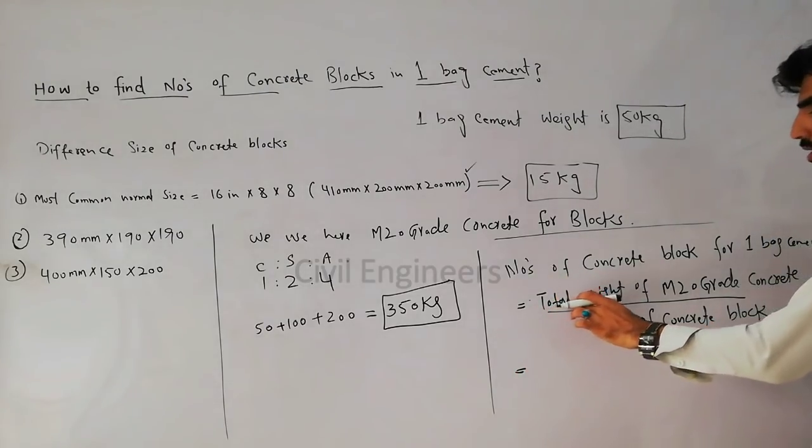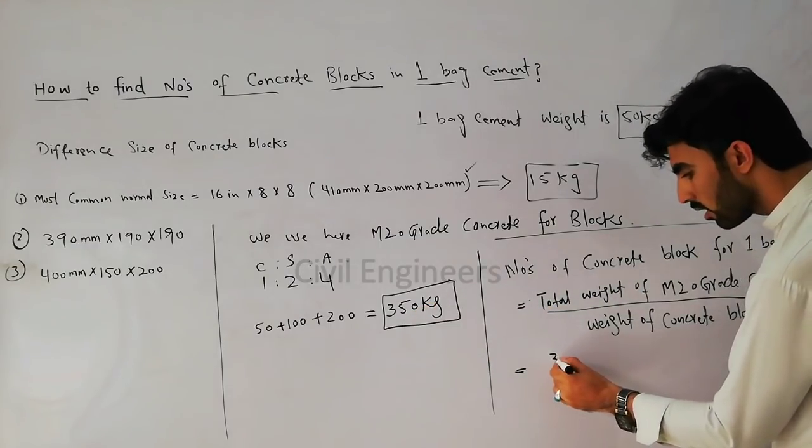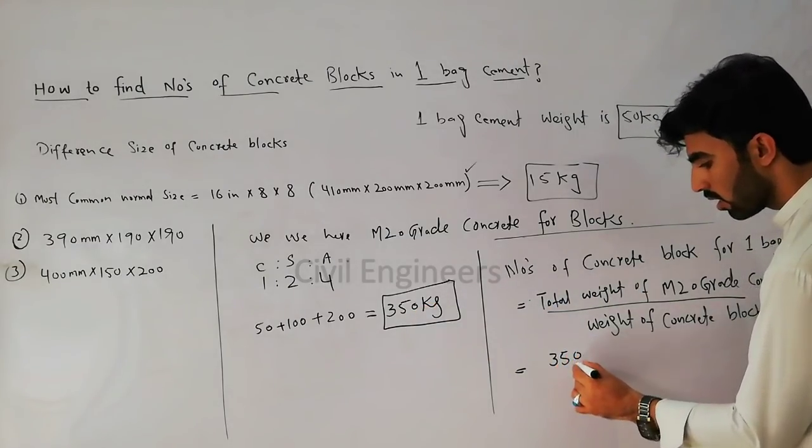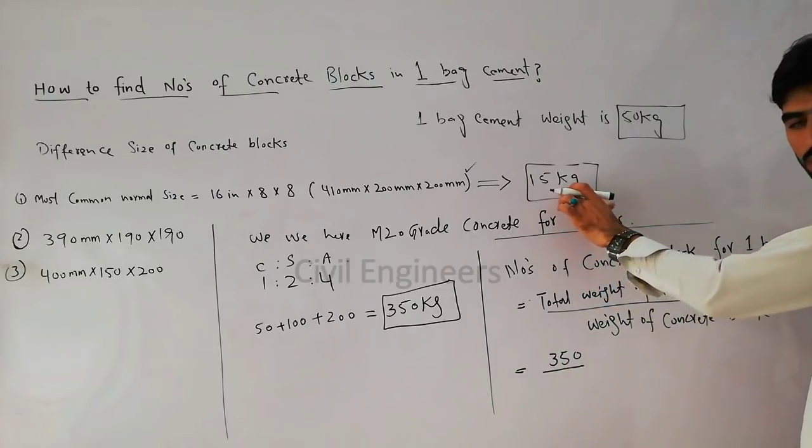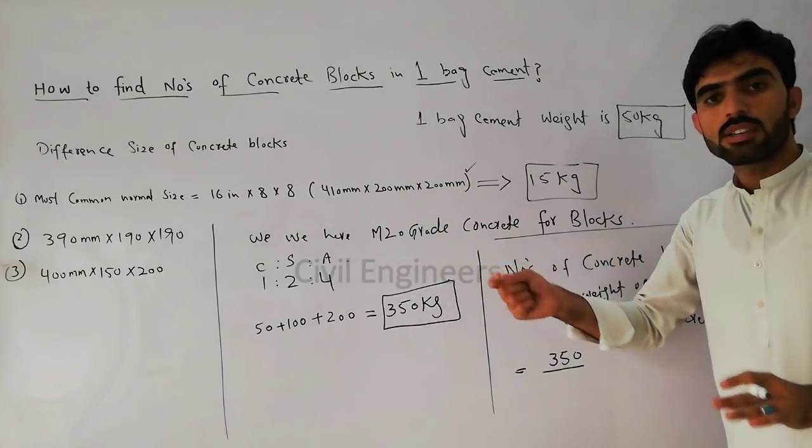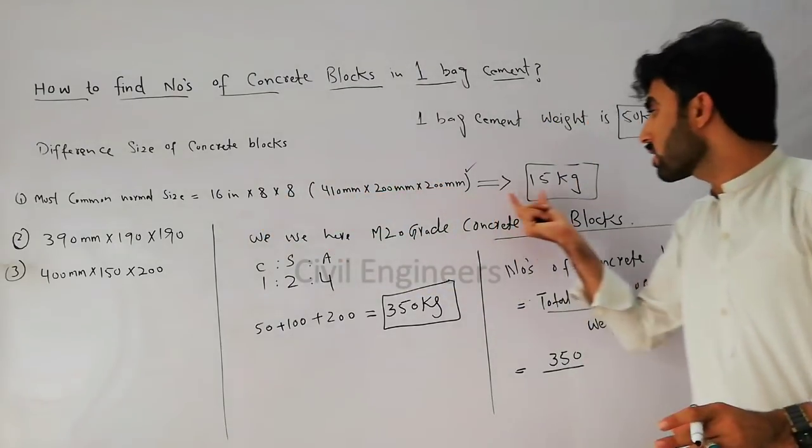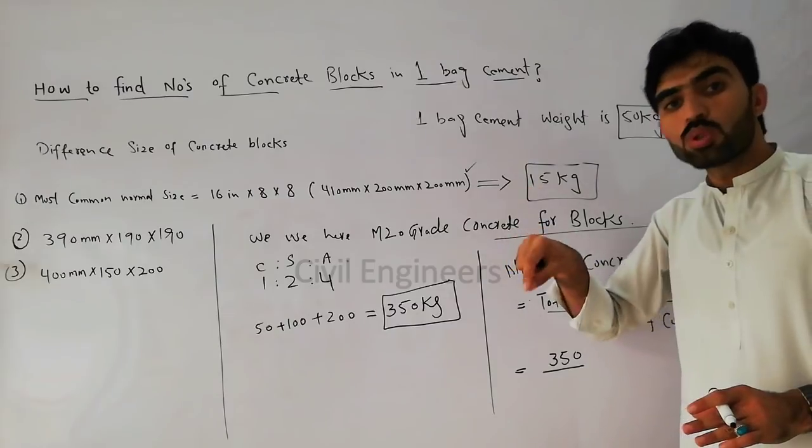This is the total weight of M20 grade concrete which is 350, divided by weight of one block. It depends on your size. Suppose I found the weight of this size is 15 kg.